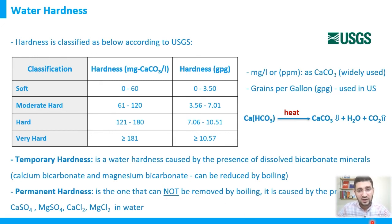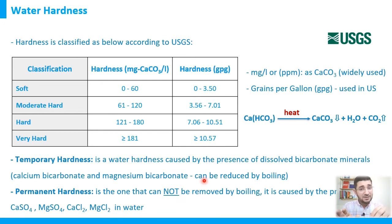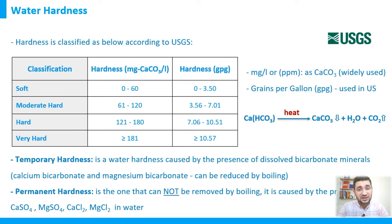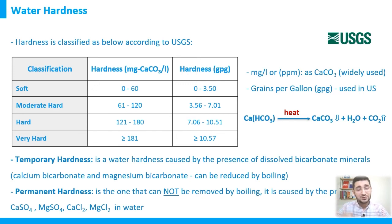Permanent hardness is mainly caused by the presence of sulfate and chloride compounds such as calcium sulfate, magnesium sulfate, calcium chloride, and magnesium chloride. To summarize: permanent hardness comes from sulfate and chloride salts; temporary hardness comes from bicarbonate salts of calcium and magnesium.